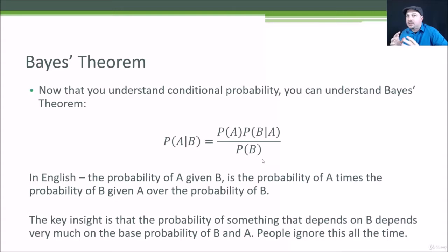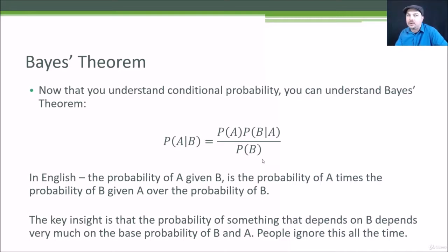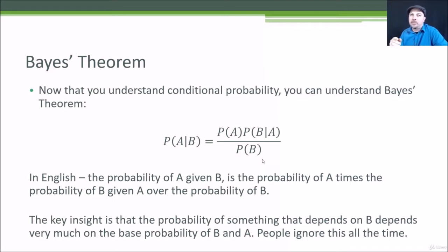It also means that the probability of B given A is not the same thing as the probability of A given B. The probability of being a drug user given that you tested positive can be very different from the probability of testing positive given that you were a drug user. There's a very real problem where diagnostic tests in medicine or drug tests yield a lot of false positives. You can still say that the probability of a test detecting a user is very high, but it doesn't necessarily mean that the probability of being a user given that you tested positive is high. Bayes' theorem allows you to quantify that difference.